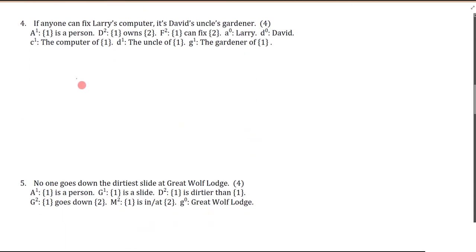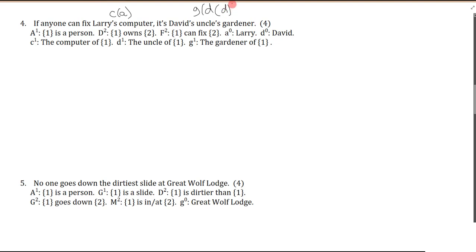Question four: If anyone can fix Larry's computer, it's David's uncle's gardener. Larry's computer is C of A (the computer of Larry). David's uncle's gardener is G of U of D — the gardener of the uncle of David. So those terms are taken care of.